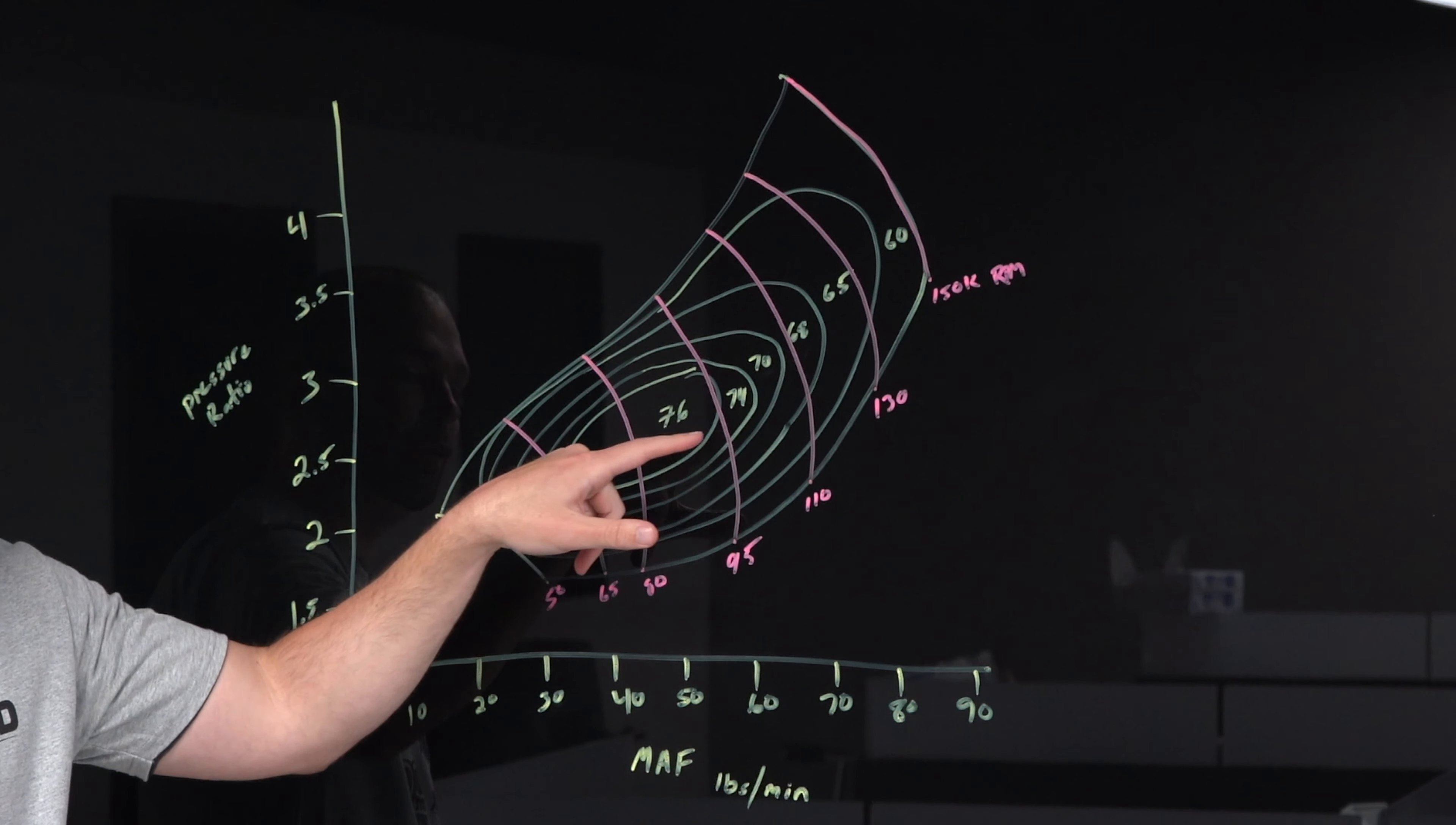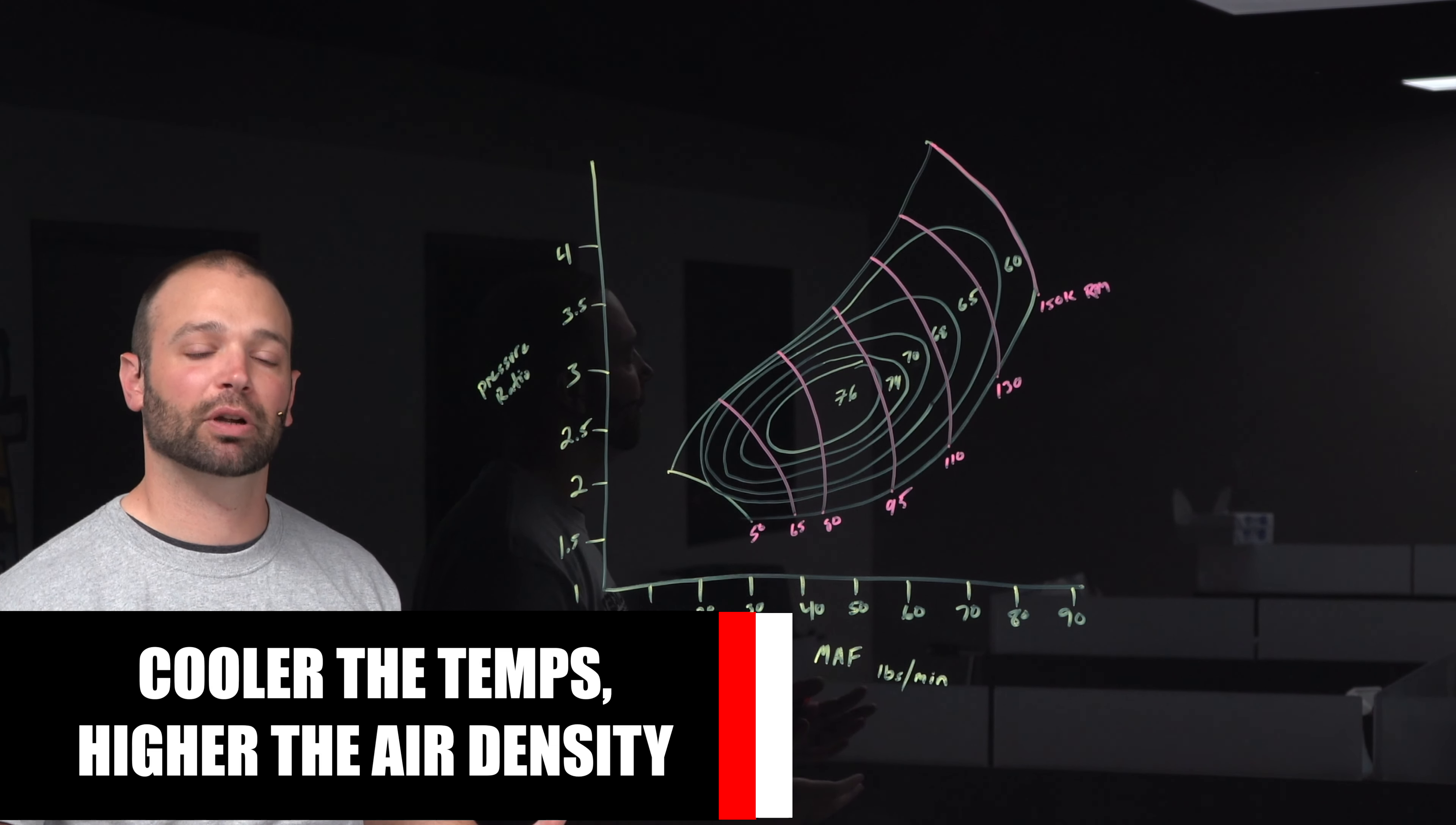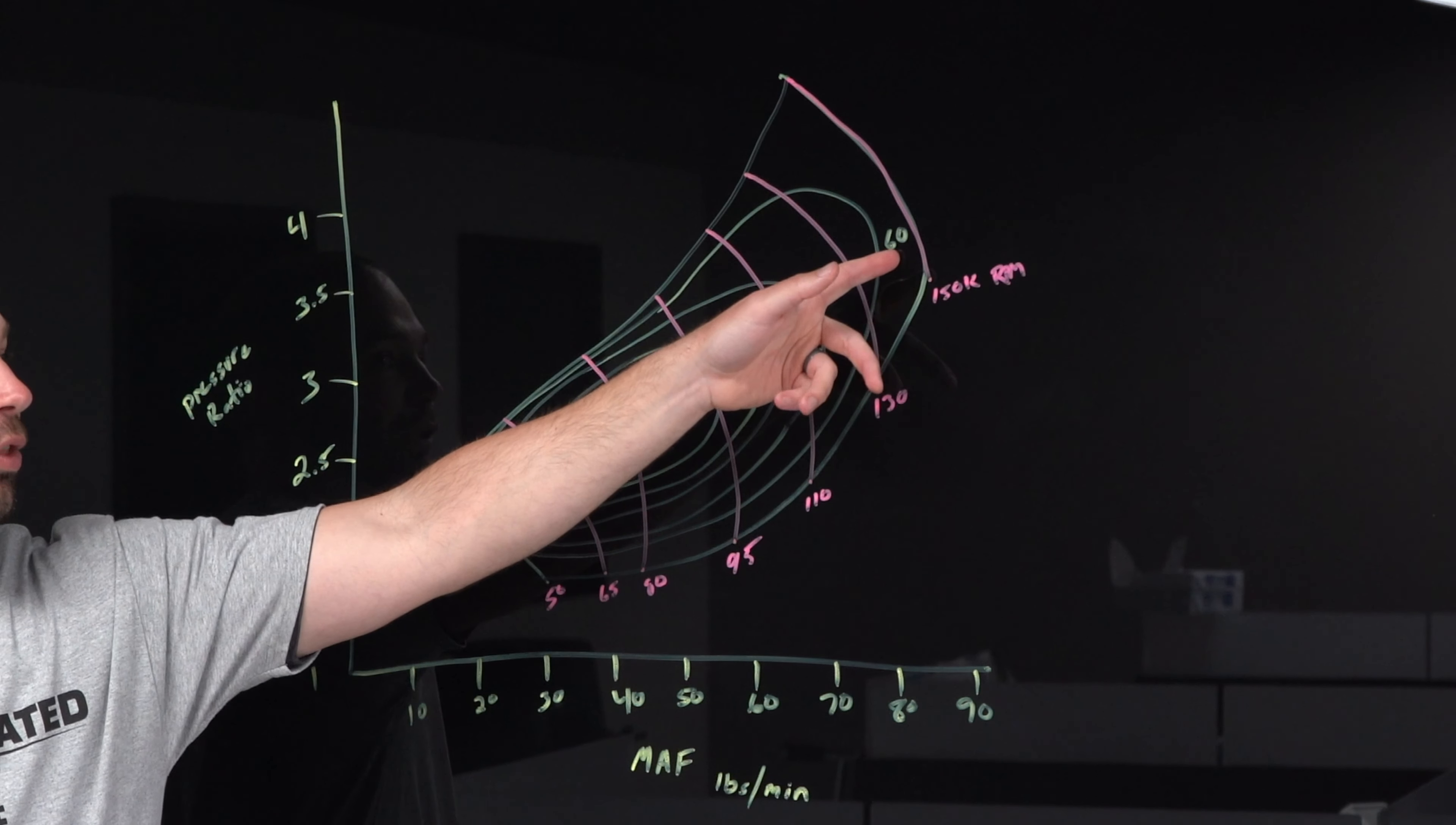As you move more air, so as you go to the right or the left, move more or less air, you come off of that efficient island. And when you see these numbers start to drop, that means that to operate the turbocharger there, you're going to add more heat and it's going to cost you more horsepower. Because in order to beat that air into submission, in order to operate the compressor at that level, it takes more drive energy from the turbine. And it's going to make that air that's being compressed less ideal.